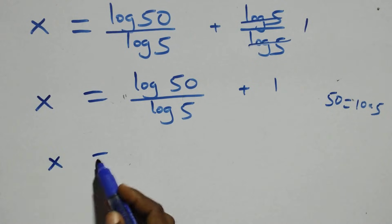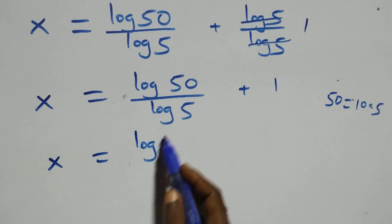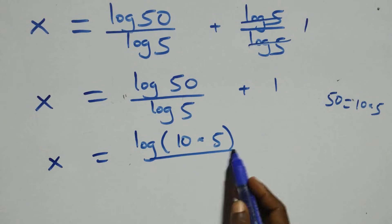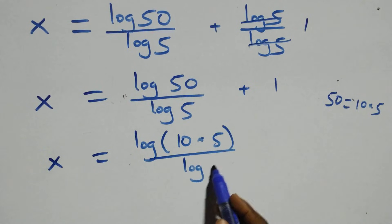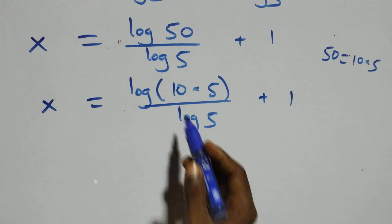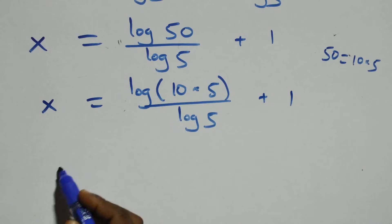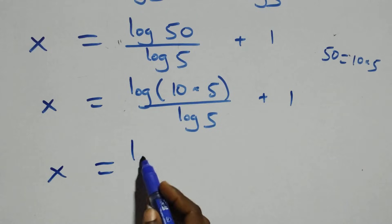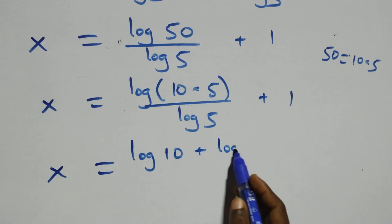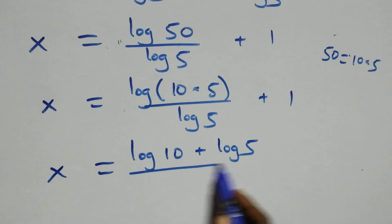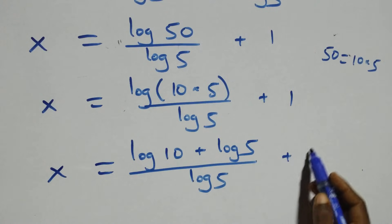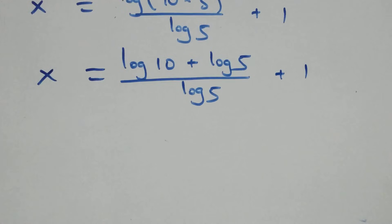This becomes x equals log(10 times 5) over log 5 plus 1. Applying the product rule, we get x equals log 10 plus log 5, all over log 5, plus 1.